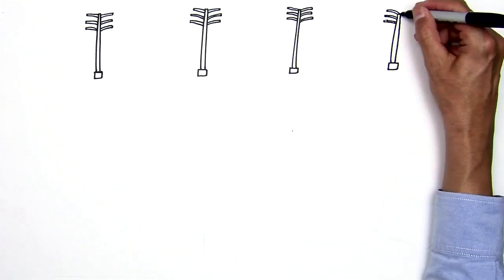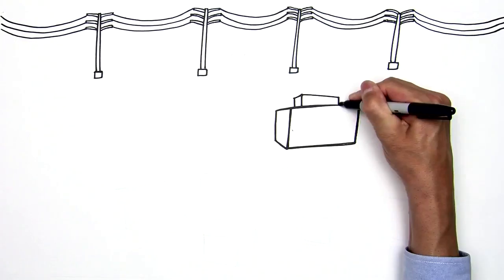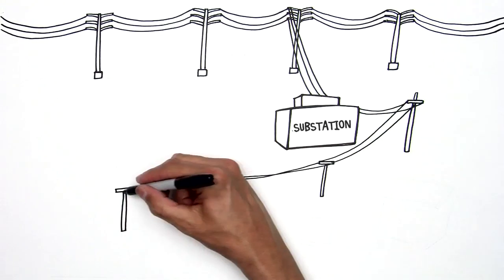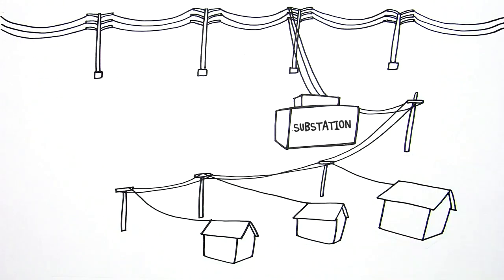The transmission network, or grid, is the interstate, moving large amounts of power across long distances. Substations act as off-ramps. Electric voltage is reduced and shipped out on a distribution network acting like a system of city streets and local roads.